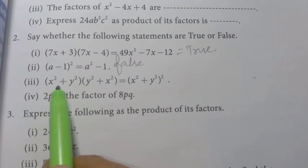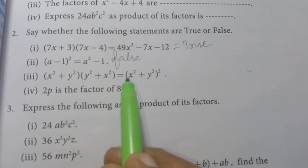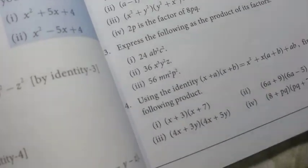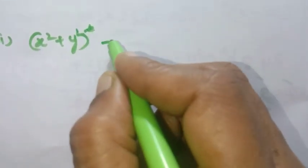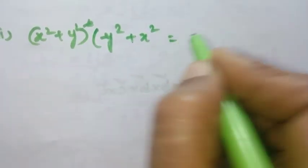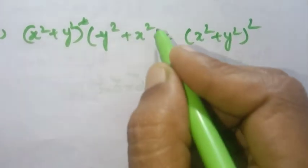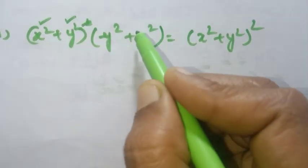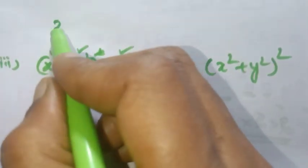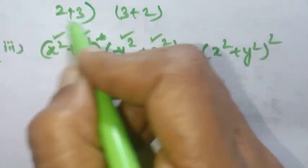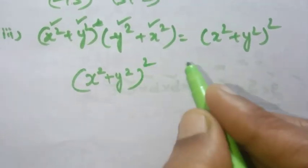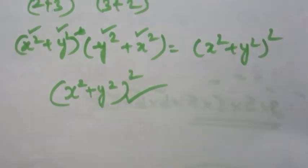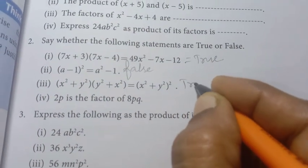Third true or false: x squared plus y squared into y squared plus x squared equals x squared plus y squared the whole square. Since x squared plus y squared and y squared plus x squared are the same expression, their product is indeed x squared plus y squared the whole square. The statement is true.